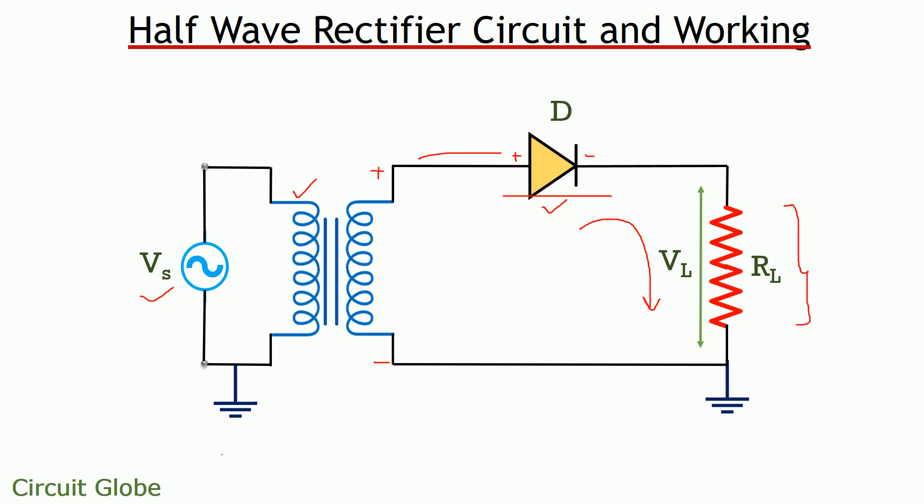But friends, as we move further and apply negative half of the AC signal at the input of the circuit, then this causes the diode to come in reverse biased condition. And we all know, in reverse biased condition, the diode starts acting as an open switch. And due to open switch condition, no further conduction through the circuit will be possible. And as no current is flowing through the diode, hence no signal will appear at the load.